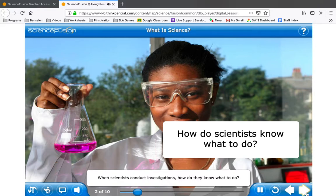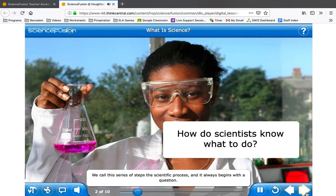When scientists conduct investigations, how do they know what to do? No matter what they are studying, scientists follow certain steps in their investigation. We call this series of steps the scientific process, and it always begins with a question.